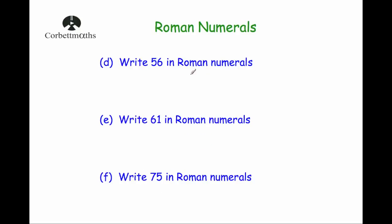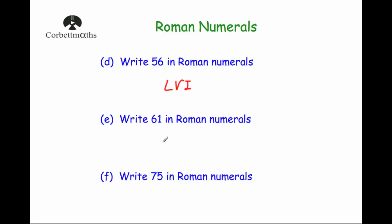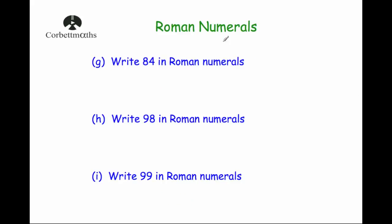Write fifty-six in Roman numerals — fifty is L and six is VI, so LVI. Sixty-one — sixty is LX and one is I, so LXI. Write seventy-five — seventy is LXX, and five is V, so LXXV. These questions are quite straightforward — just make sure we do the tens and then the units. Write eighty-four — eighty is LXXX and four is IV, so LXXXIV.